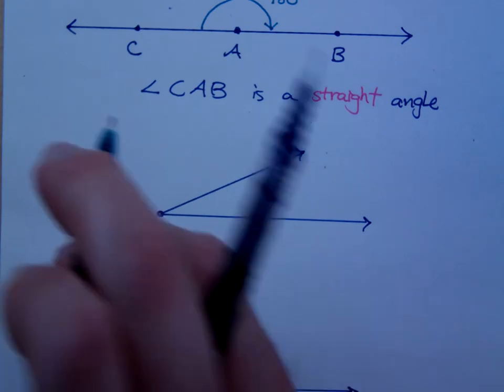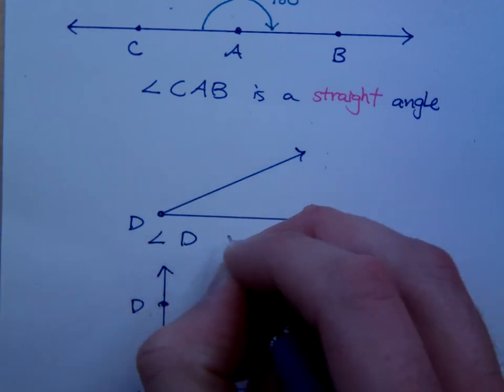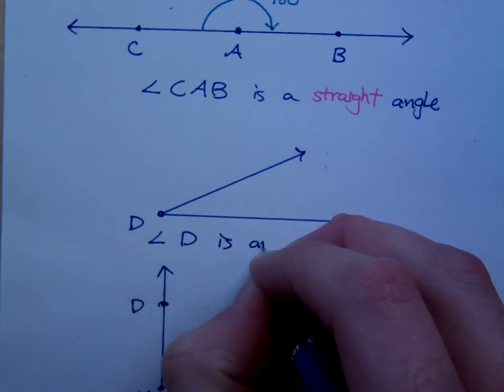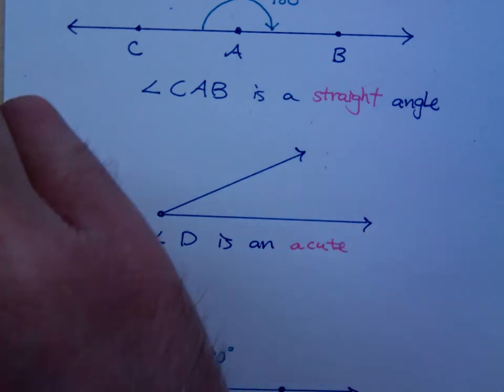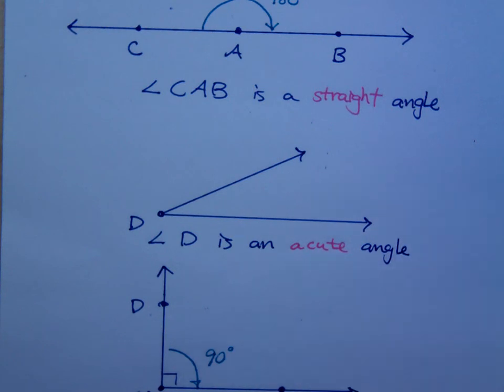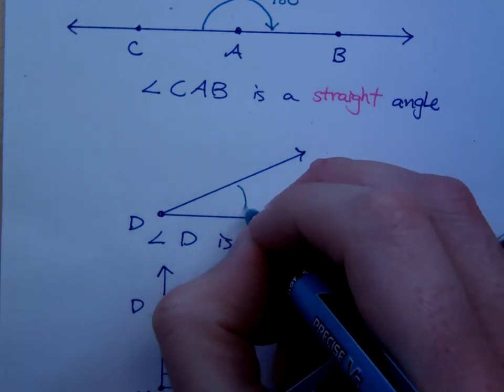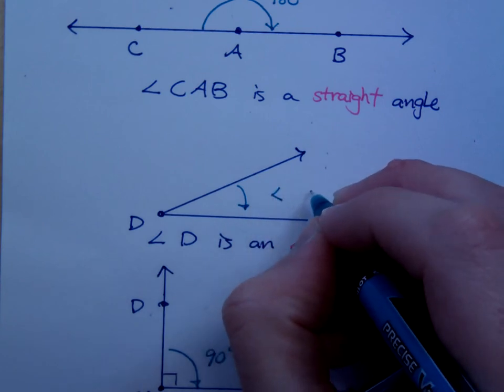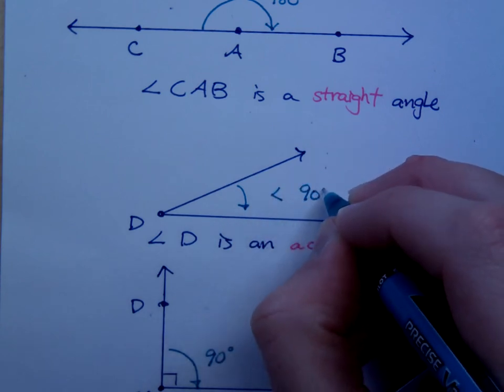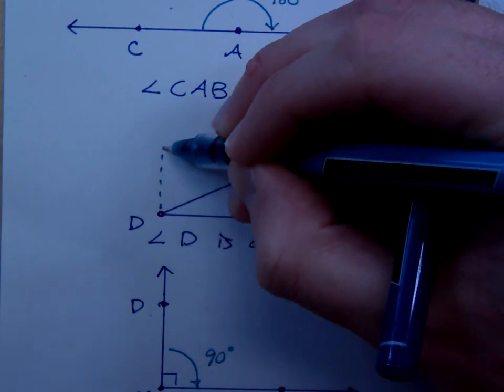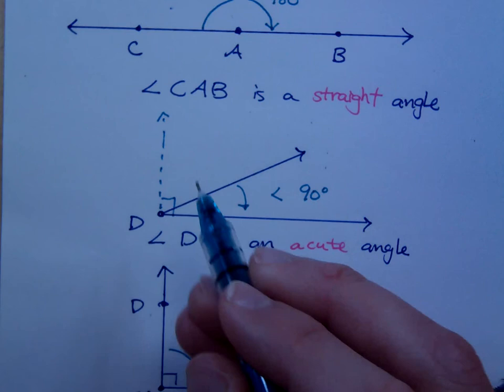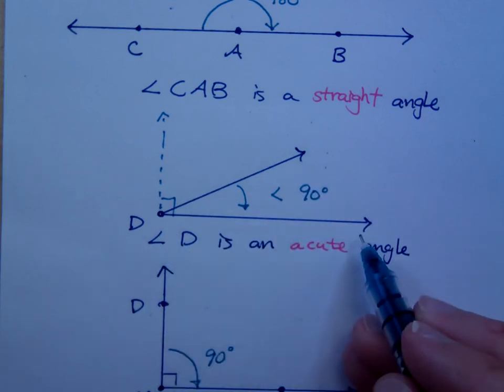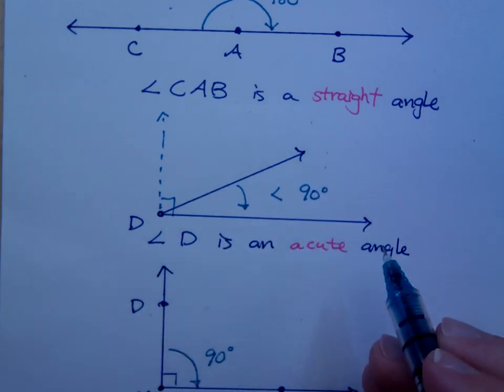Now, this guy right here, this angle D, is an acute angle. And the reason that it is an acute angle is because this measurement here is less than 90 degrees. So, if you were to extend this like this, this would be a right angle. And you see that this angle that I've drawn is less than 90 degrees. That makes it an acute angle.